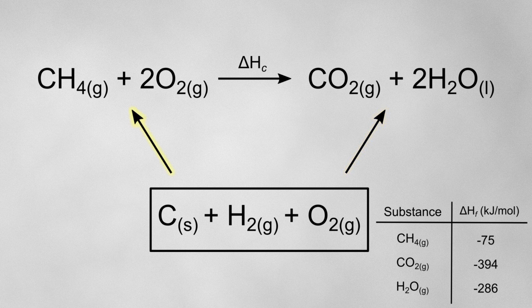On this arrow, I'm going to put the formation enthalpies for the reactants. I'll need the enthalpy of formation for methane, which is minus 75 kJ per mole. Notice that there's no formation enthalpy for oxygen — this is because oxygen is just an element, so it has no formation enthalpy.